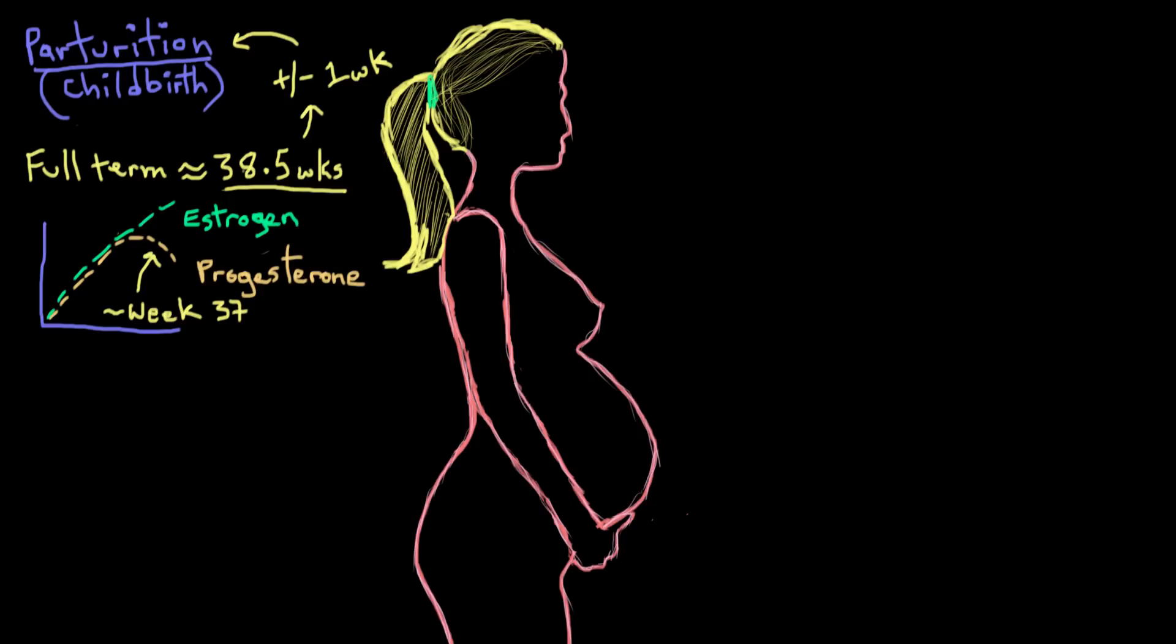And the new higher ratio of estrogen to progesterone kind of causes the uterine muscle to be more sensitive to other hormones like oxytocin from the posterior pituitary gland that try to stimulate uterine contractions.